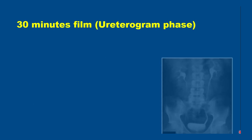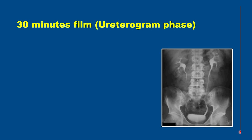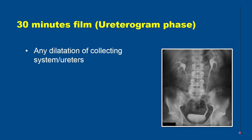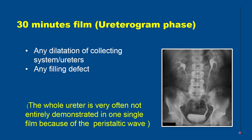The next film is taken at around 30 minutes and is known as the ureterogram phase. In this we look for any dilatation of the collecting system or ureters and evidence of any filling defect within the collecting system or ureters. The whole ureter is very often not entirely demonstrated in one single film because of the peristaltic wave, so we may have to look at other films as well.